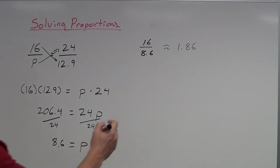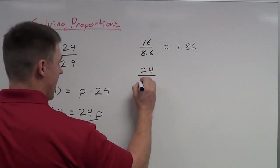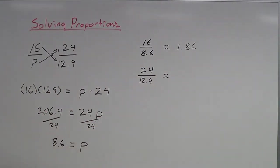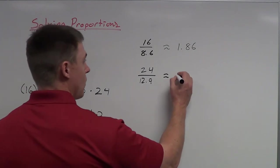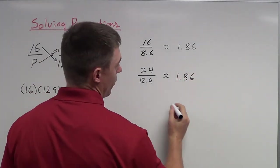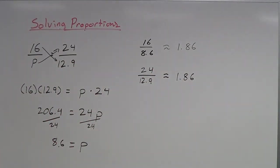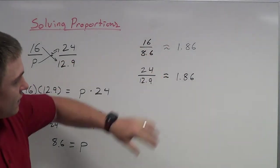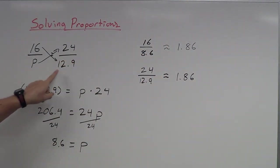Then you can also check 24 divided by 12.9 and see approximately what that is. So 24 divided by 12.9 is going to be 1.86 approximately. If you notice that both of these fractions are indeed the same decimals, the left and the right side are equal. So that tells me that the answer I got is in fact correct.